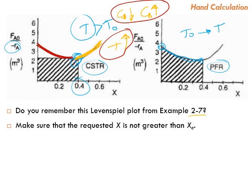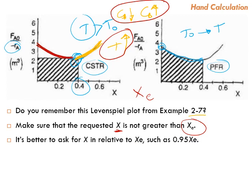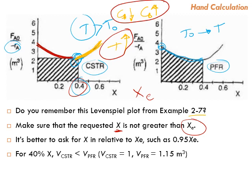Make sure that the requested conversion is not greater than the equilibrium conversion — this is very important. That's why we were calculating Xe, to know how far X is from Xe. It's better to express the desired conversion relative to the equilibrium conversion, such as 95% of equilibrium conversion. Instead of saying we need 40% conversion, we can say we need maybe 80% of the equilibrium conversion. This way, we make sure we are always requesting something reasonable. For 40% conversion, the volume of the CSTR is less than the volume of the plug flow reactor.